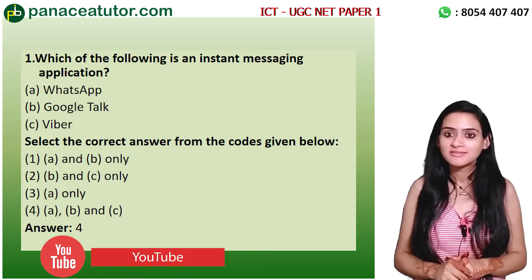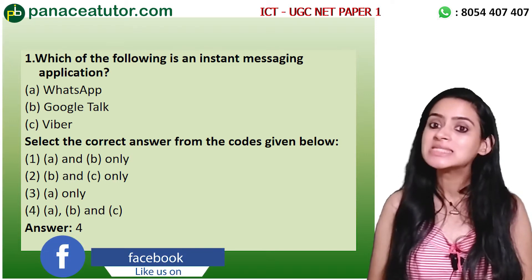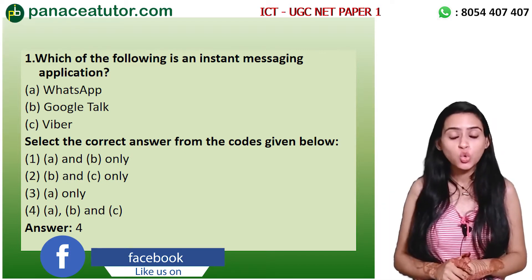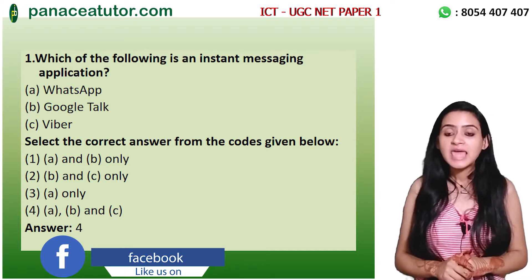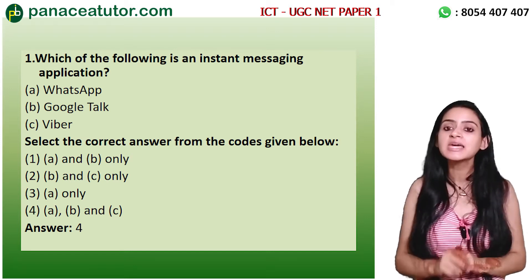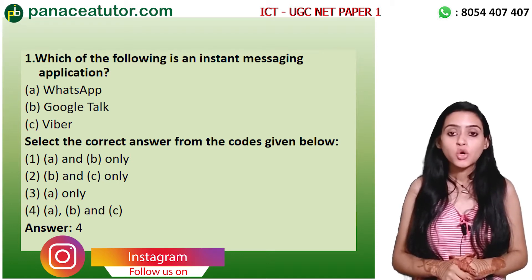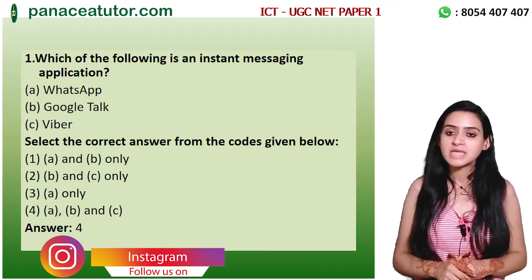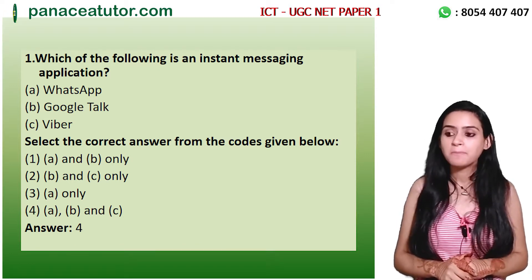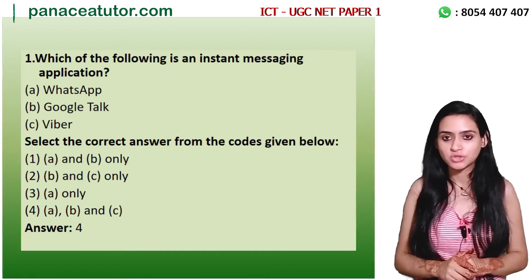Question: Which of the following is an instant messaging application? Option A: WhatsApp, Option B: Google Talk, Option C: Viber. The codes given are: Code 1 is A and B only, Code 2 is B and C only, Code 3 is A only, and Code 4 is A, B and C. The correct answer is Code 4 — WhatsApp, Google Talk, and Viber are all instant messaging applications.